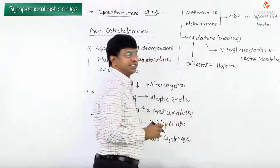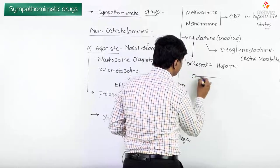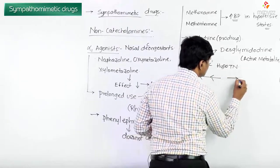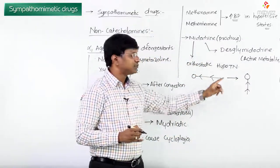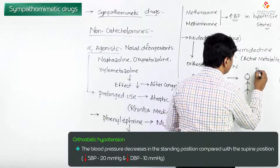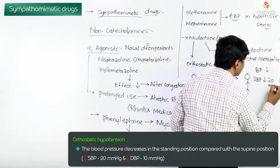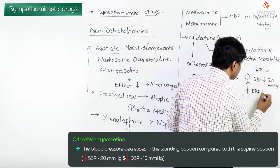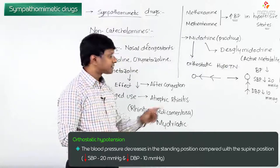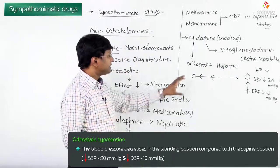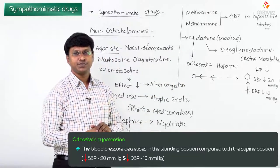Orthostatic hypotension is defined as: when moving from supine to standing posture, the systolic blood pressure reduces by 20 mmHg and the diastolic blood pressure reduces by 10 mmHg. That is what is called orthostatic hypotension, and midodrine is used in this condition.